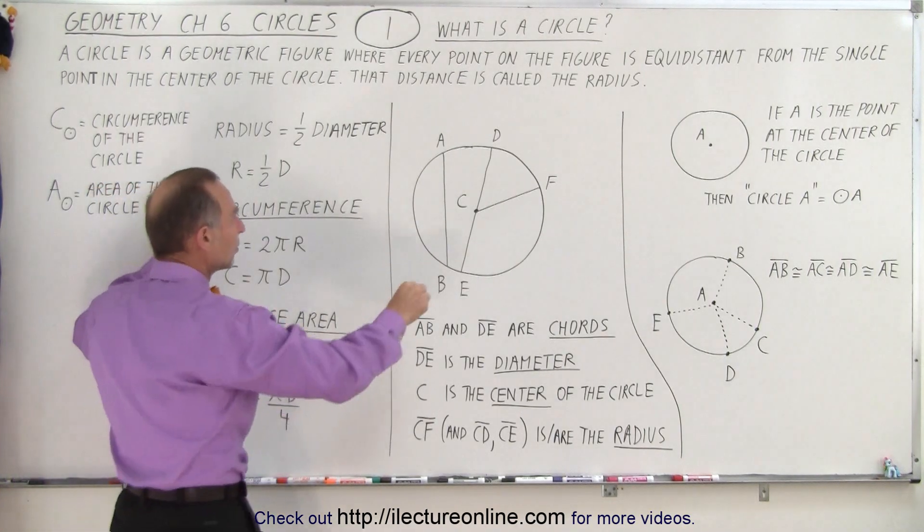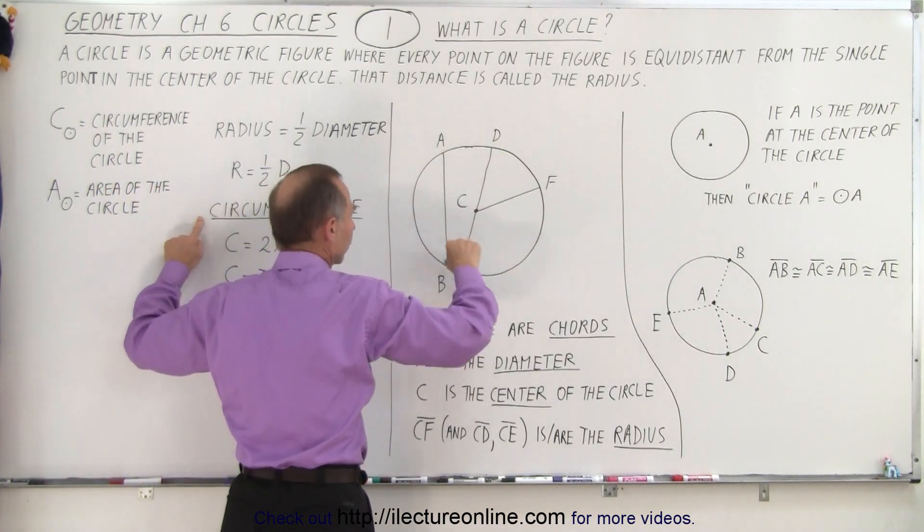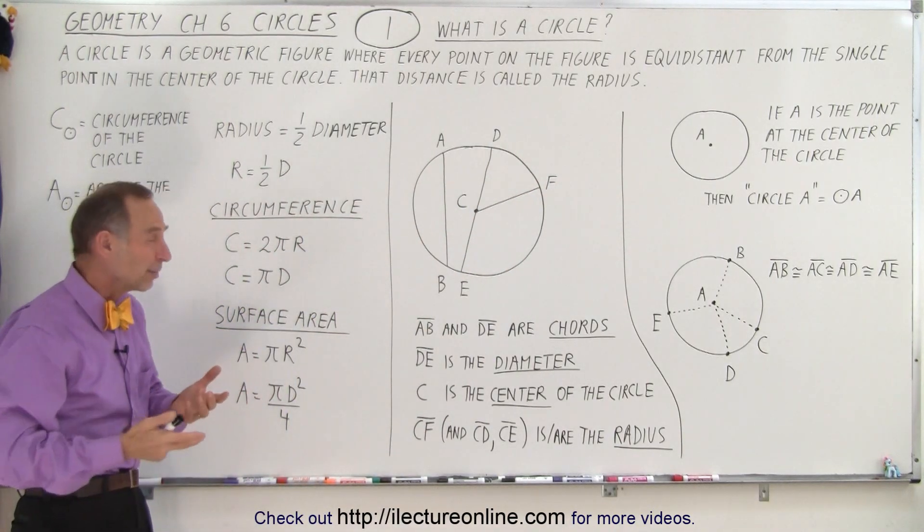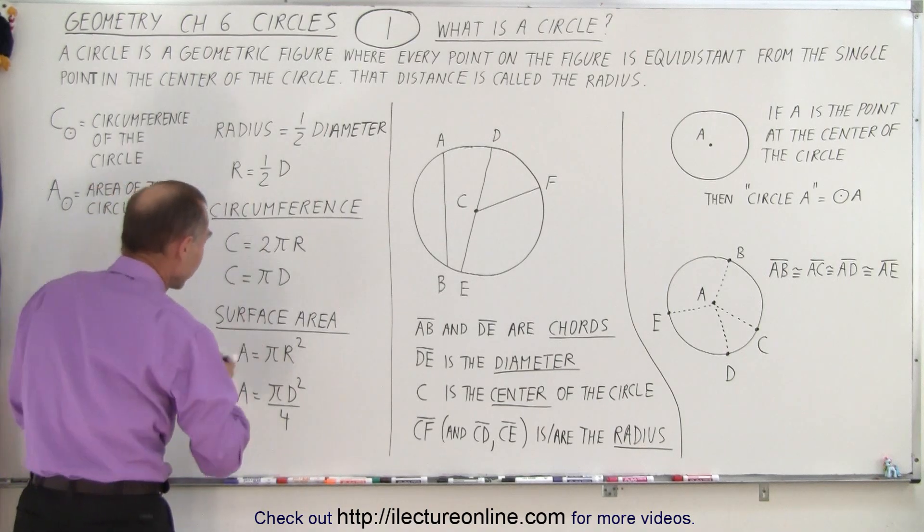The circumference, meaning the distance going all the way around the circle, is equal to 2π times the radius. Now what is π? π is approximately 3.14159,